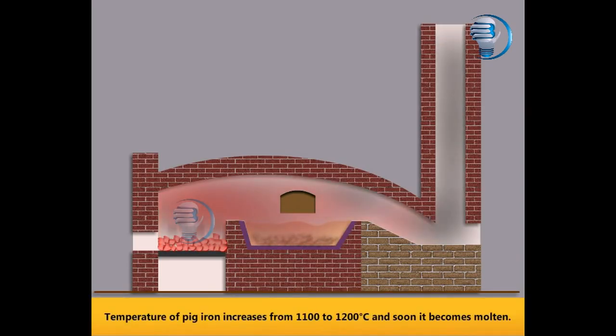Temperature of pig iron increases from 1100 to 1200 degrees Celsius and soon it becomes molten. During the final stage, carbon is oxidized and escaped as carbon monoxide.